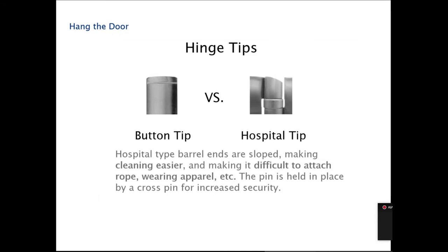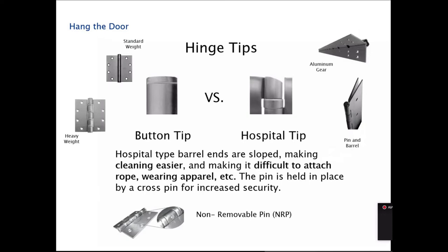A standard hinge has a butt tip, which is very common and used in most everything we do. But a butt tip has a small ridge that allows bacteria to collect, and once that happens you can't clean it — it's a hazard. Also, with a butt tip, you can put string or rope on it, creating a choking hazard. If you're in behavioral health, this poses a safety risk. To get around that, you use a butt hinge with a hospital tip or a continuous hinge with a hospital tip.